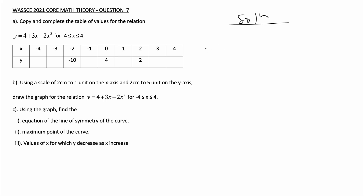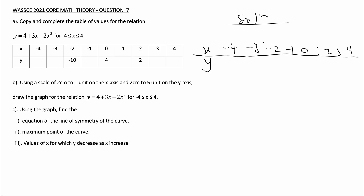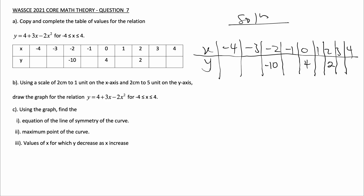Let's begin with our solution. We have our table with x values: minus 4, minus 3, minus 2, minus 1, 0, 1, 2, 3, and 4. We already have minus 10, 4, and 2 filled in. We are using the relation y is equal to 4 plus 3x minus 2x squared.